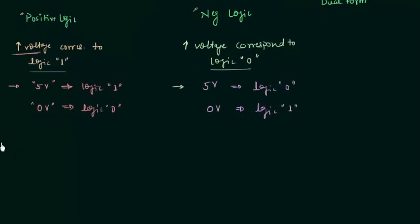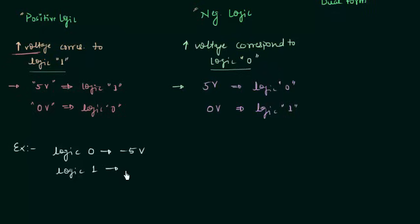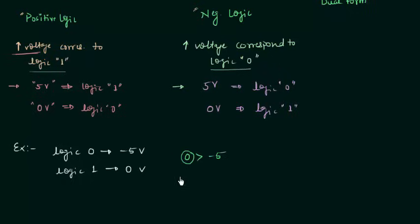Let's practice one problem. In this example, logic 0 corresponds to minus 5 volts, and logic 1 corresponds to 0 volts. We have to find out what type of logic it is — positive or negative. First, find the greater voltage: comparing 0 volts and minus 5 volts, 0 volts is greater. In positive logic, the higher value must be logic 1, so 0 volts would be logic 1 and minus 5 volts would be logic 0.